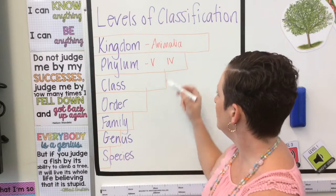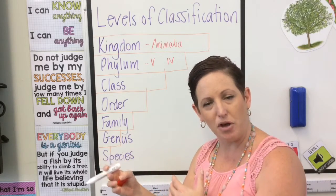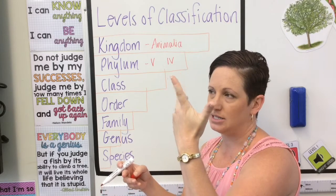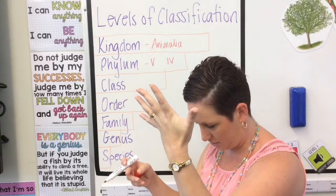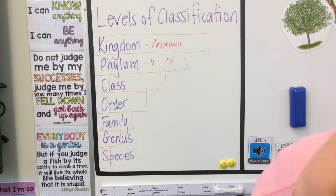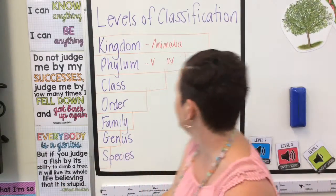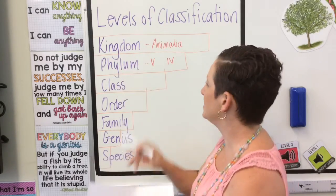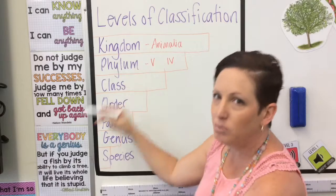Our invertebrate groups — animals without a backbone — are the annelids, molluscs, crustaceans, arachnids, insects, and myriapods. So we've got five vertebrate classes and six invertebrate classes, making 11 class groups in total. Every time we go down a level, we're going into smaller groups — things like mammals, reptiles, annelids, molluscs, or insects. Those 11 different classes are the ones we are classifying this term in science.